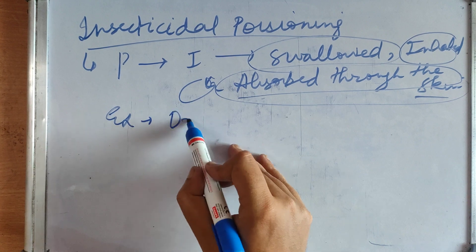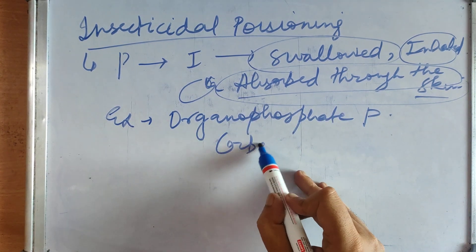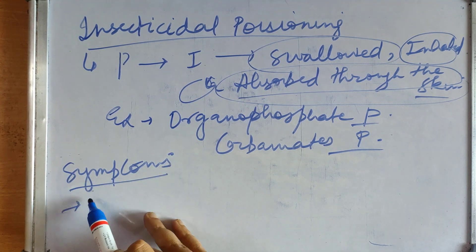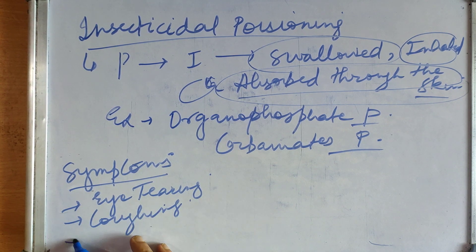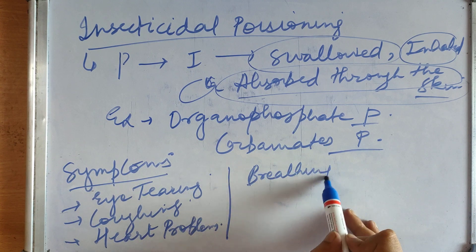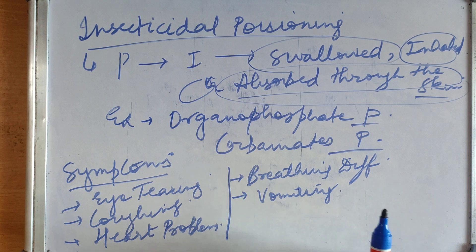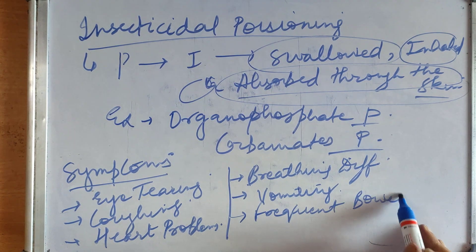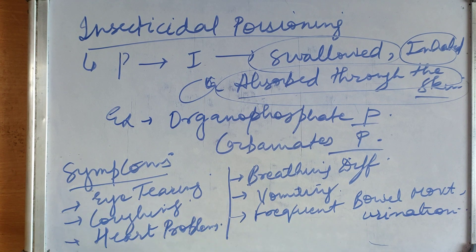And this is mainly seen in pesticides of family organophosphate poisoning is very common, carbamate poisoning, etc. So what are the symptoms of these poisonings? Symptoms are eye tearing, coughing, heart problems, breathing difficulties, vomiting, frequent bowel movement and urination. Frequent bowel movement, loose motions can be there, diarrhea can be there, frequent urination can be there. These are the common symptoms.